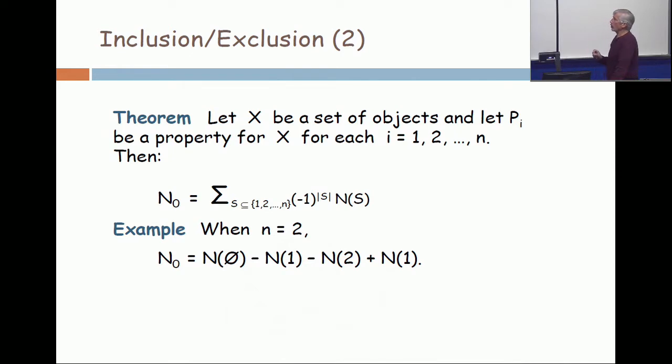The notation is N_0 is the number of elements in the universe that satisfy none of the properties. We also write N(S) with parentheses around the S to be the objects which satisfy all the properties in the set S.